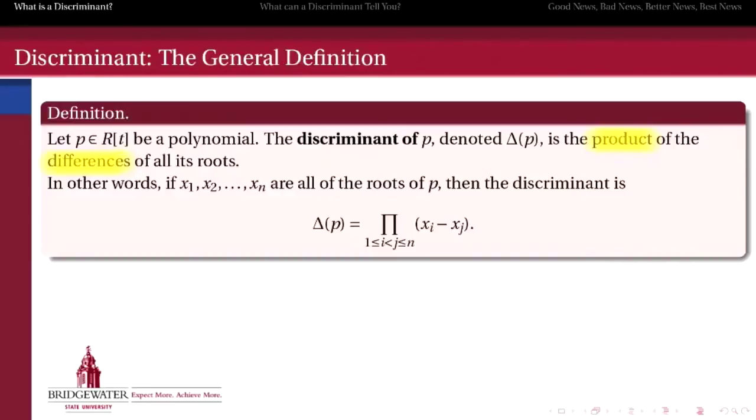In other words, if we know the roots of p, then by subtracting them pairwise and then multiplying those differences together, we get the quantity that we will call the discriminant of p.